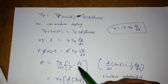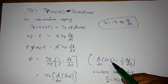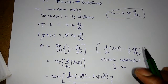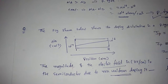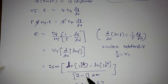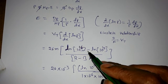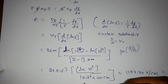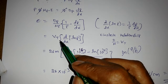Rearranging, E = (Dp / μp) × (1/p) × (dp/dx). Using the identity (1/p)(dp/dx) = d/dx(ln p), and from the diagram: at 1 μm the concentration is 10^14 and at 2 μm it is 10^16. So d(ln p)/dx = (ln(10^16) − ln(10^14)) / (2 − 1) μm = ln(100) / 1 μm = ln(100) / 10^−4 cm.